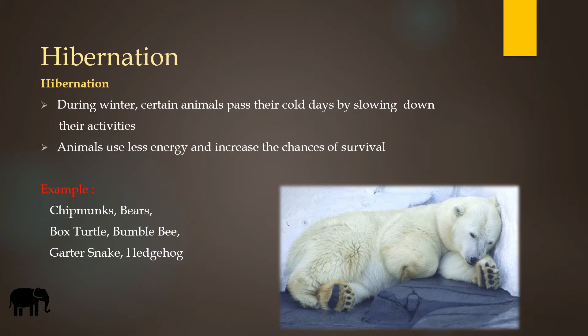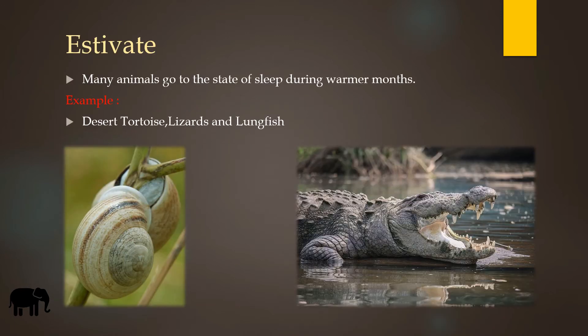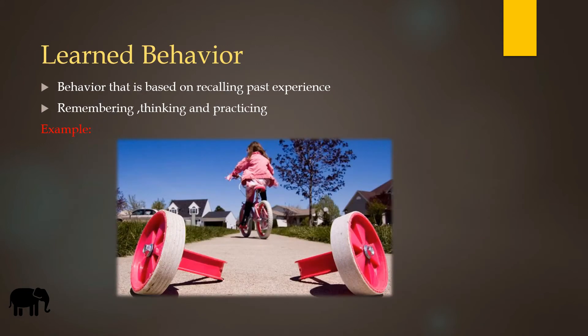Estivation: many animals go into a state of sleep during warm months. Examples include snails, crocodiles, desert tortoises, lizards, and lungfish. Learned behavior is behavior that is based on recalling past experience.